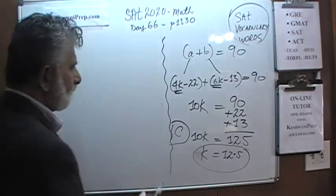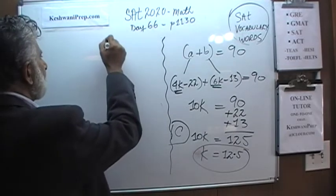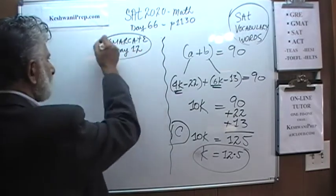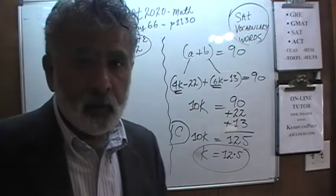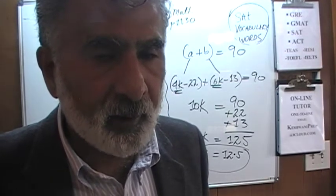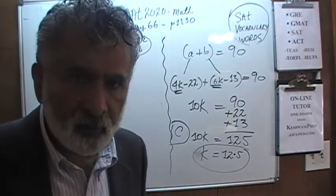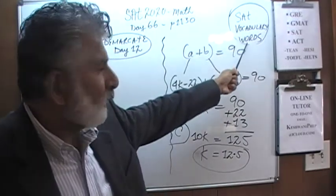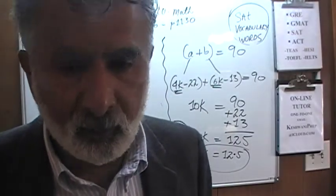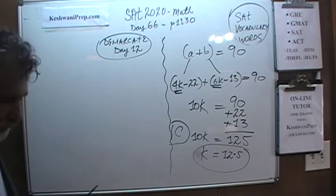We used the word demarcation — if you're interested, just type in 'SAT vocabulary words day number 12.' You will learn the word demarcate. The noun is demarcation. Demarcation is a boundary; to demarcate something is to put a boundary or border around it.